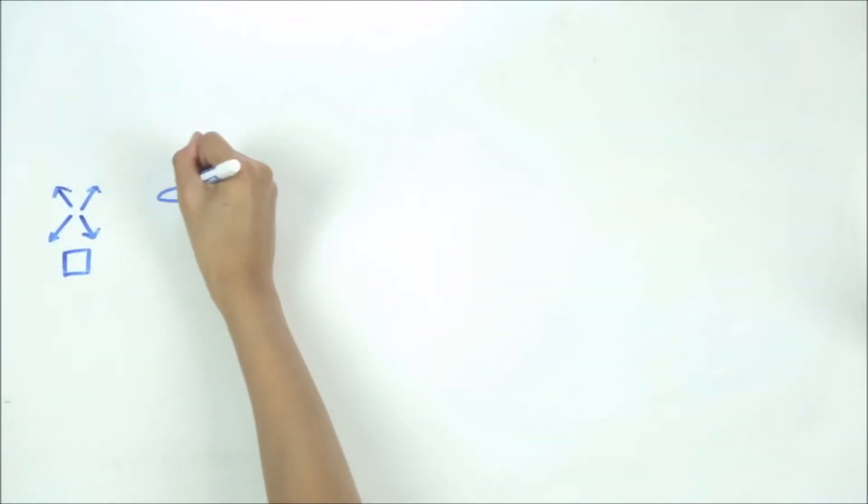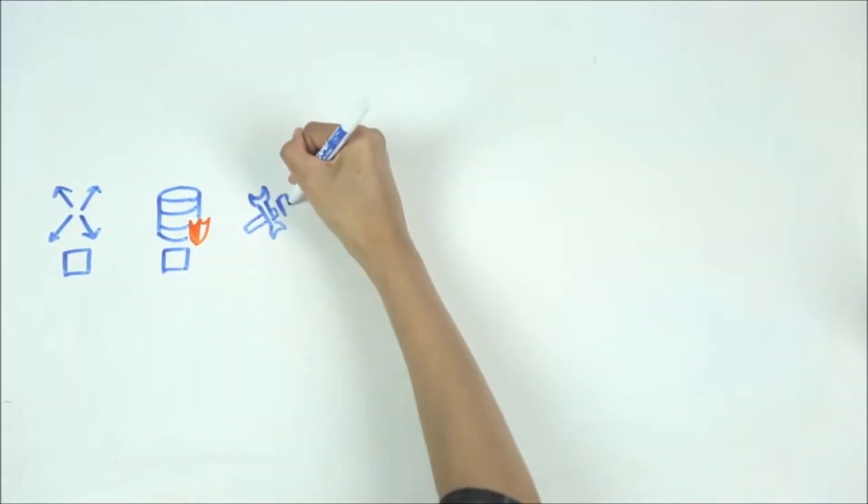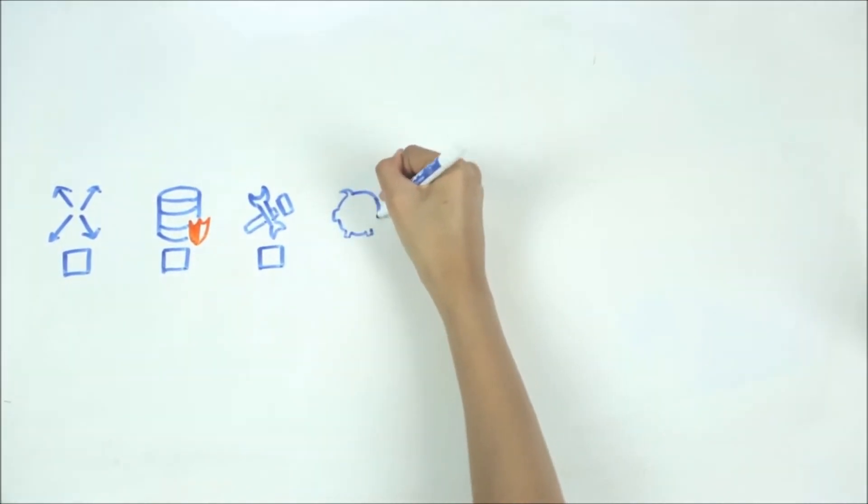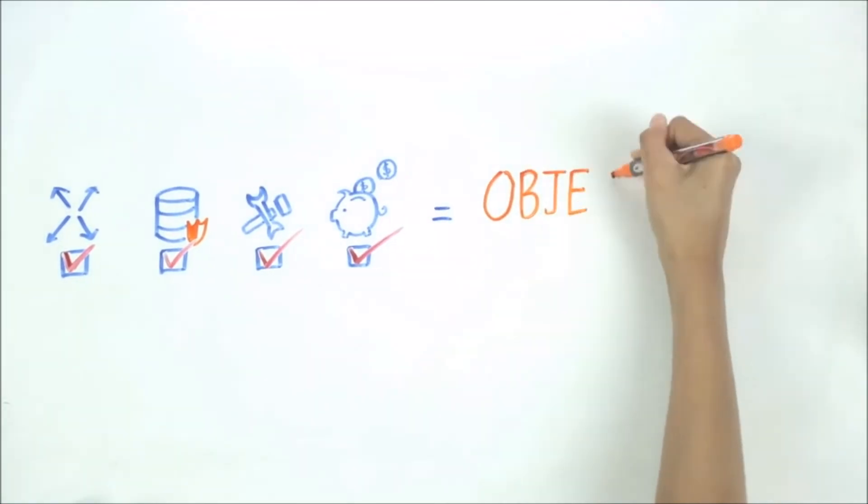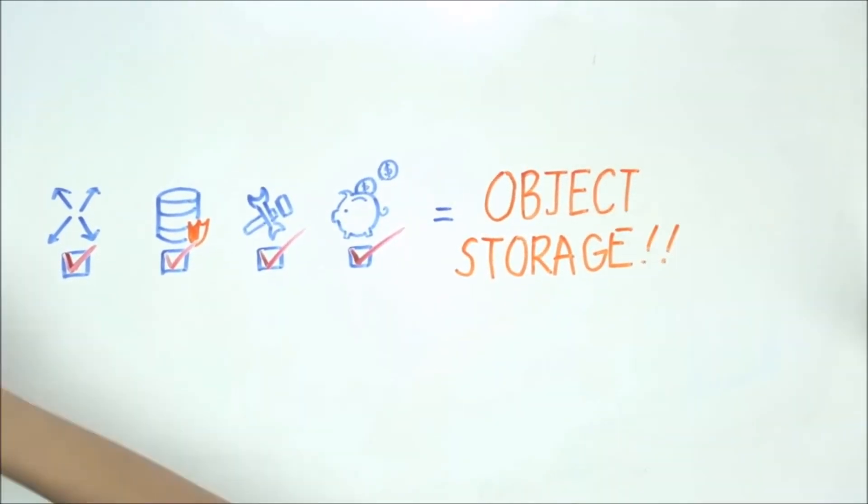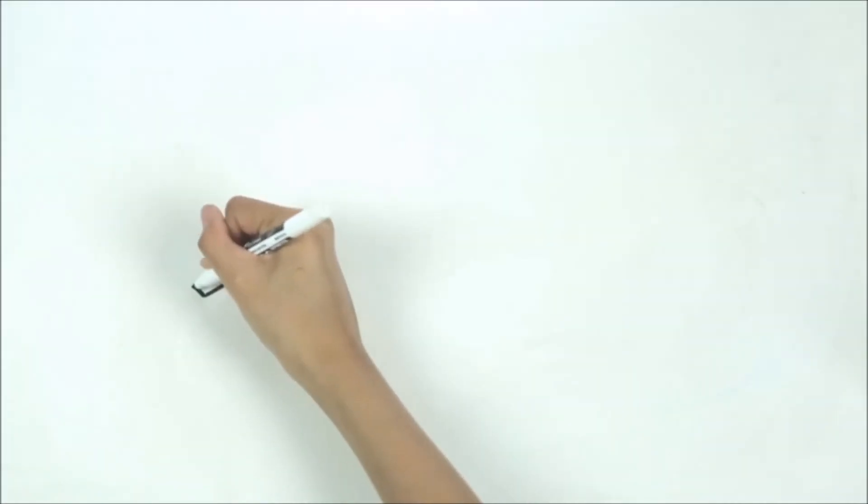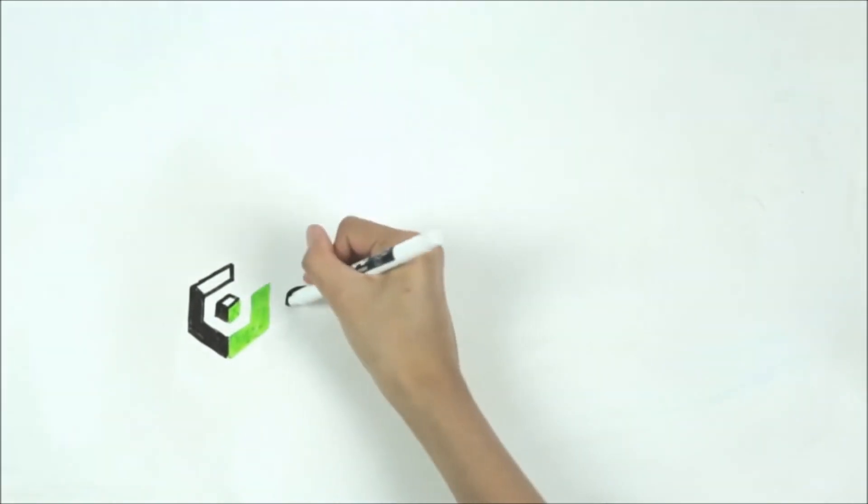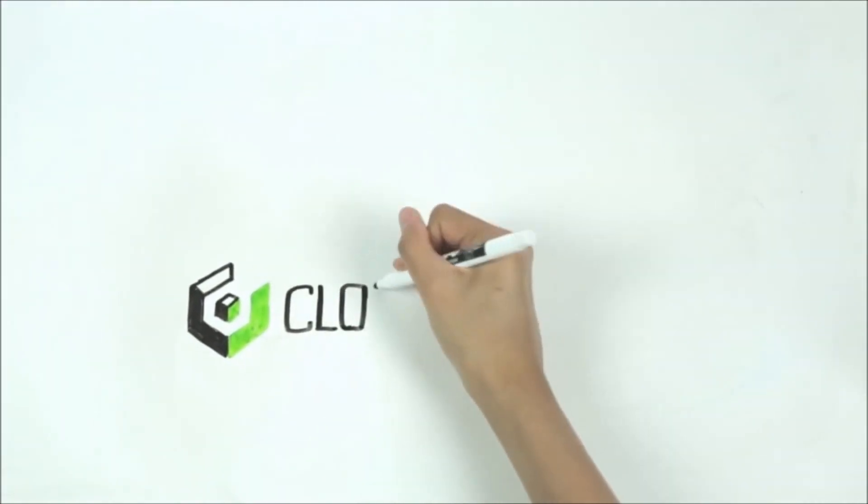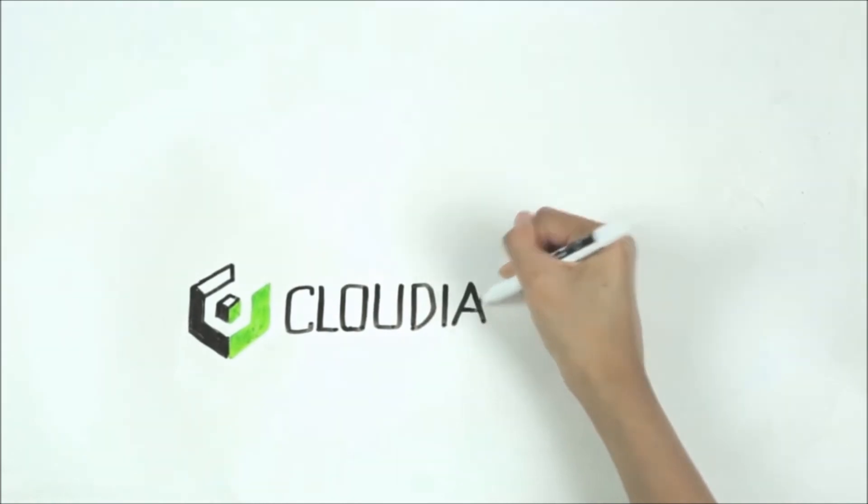For those who are looking for a way to manage storage with increased scalability, simplified data protection, and high data durability all while mitigating costs, object storage is the way to go. With Cloudion being the only fully S3-compatible object storage provider and leader in software-defined smart data storage, learn more about how your business can integrate object storage solutions at cloudion.com.